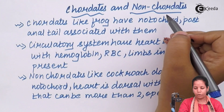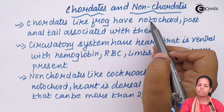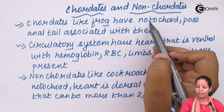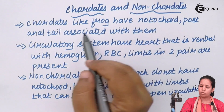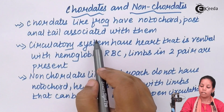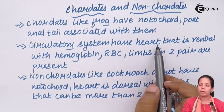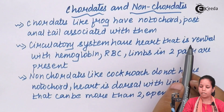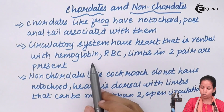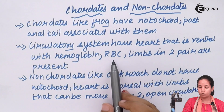Chordates like frog have a notochord, or simply a spinal cord. They have a post-cranial tail which is associated with these organisms. The circulatory system in them has a heart, which is the pumping organ that is ventrally placed, with hemoglobin — the oxygen-carrying red color pigment — along with RBCs that totally form the blood component.